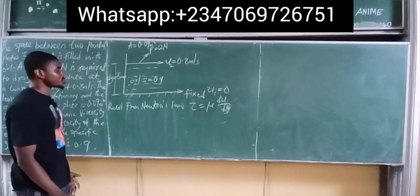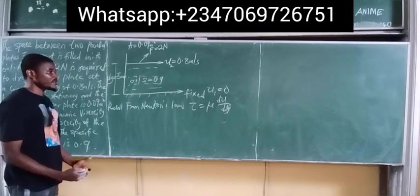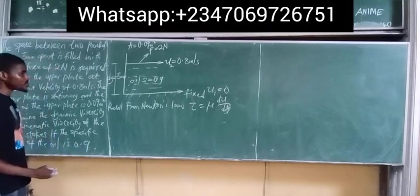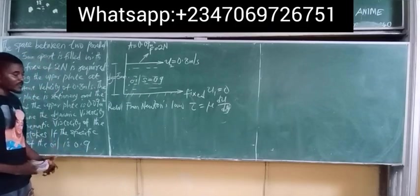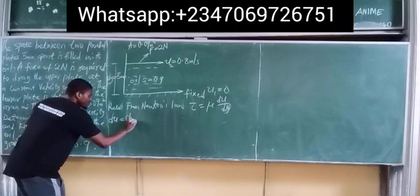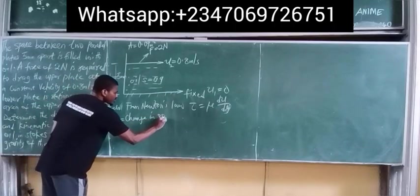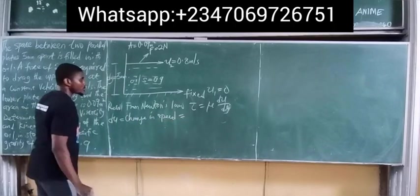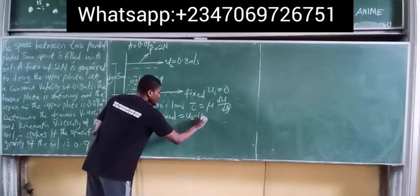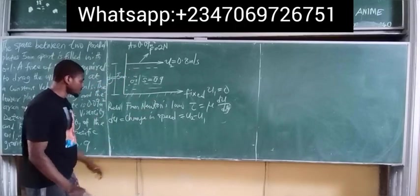du simply means change in velocity, which is change in speed. du is equal to u2 minus u1 — the speed of the upper plate minus the speed of the lower plate.